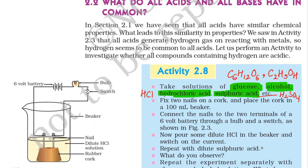So why are they asking us to take all these compounds? Because all of them have hydrogen in them. Now fix two nails on a cork and place the cork in a 100 ml beaker, as shown in the figure. Connect the nails to two terminals of a six-volt battery through a bulb and a switch.